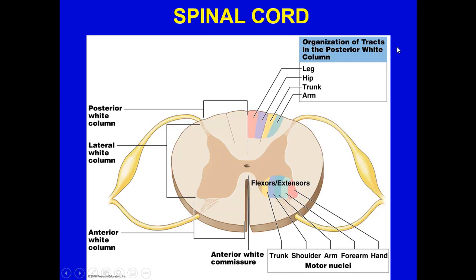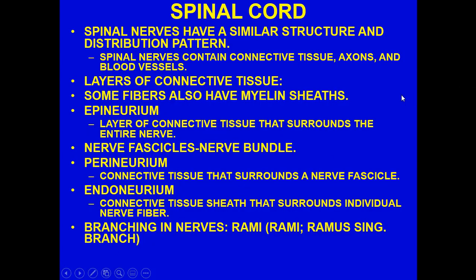The organization of tracts in the posterior white column maps to body regions: leg, hip, trunk, arm — pathways ascending to the brain to relay sensory information. Examples include stepping on a tack, itching on the hip, a sunburn on the trunk, or a mosquito bite on the arm. The motor nuclei in the anterior gray horn organize output to trunk, shoulder, arm, forearm, and hand muscles. Some columns may carry both ascending and descending information. Spinal nerves share a similar structure and distribution pattern across individuals.